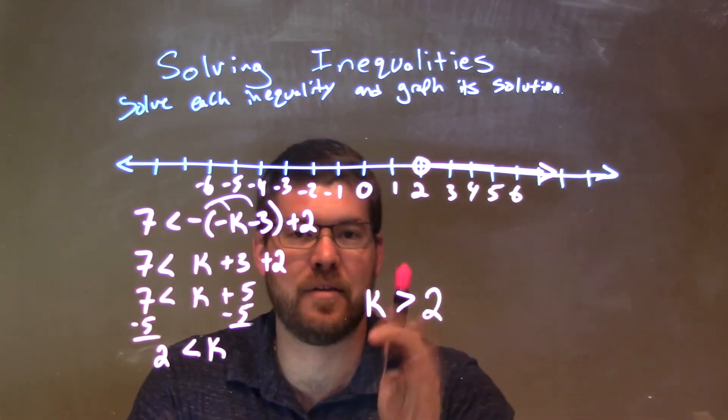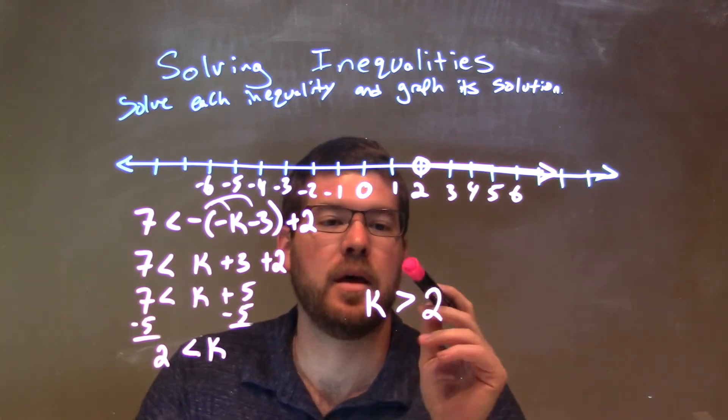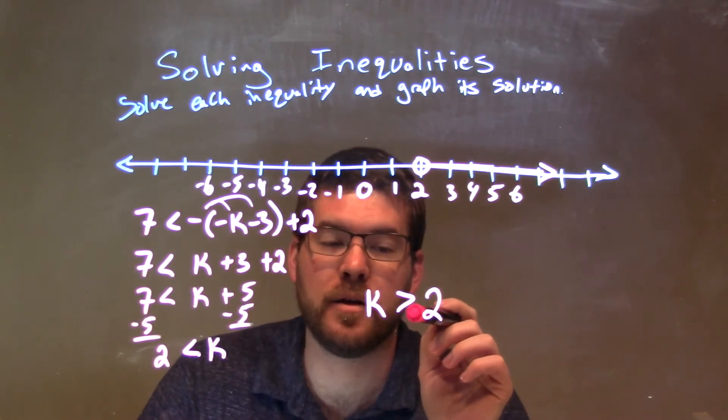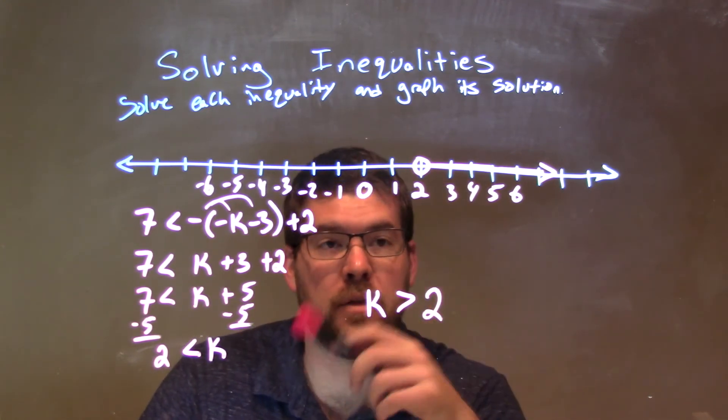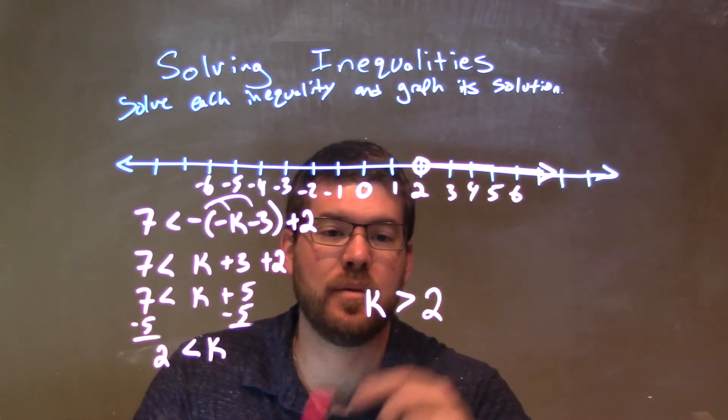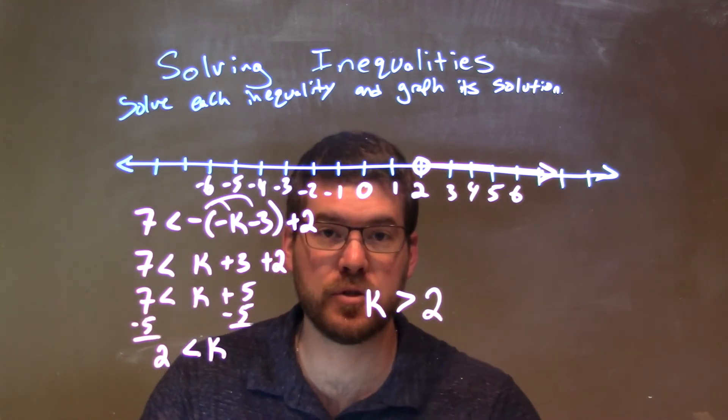2 is less than k is the same thing as k is greater than 2, so I wrote it like that having k come first. Since it's not equal to 2, we have an open circle at 2, and we shade to the right because k is greater than 2. Our final answer is k is greater than 2.